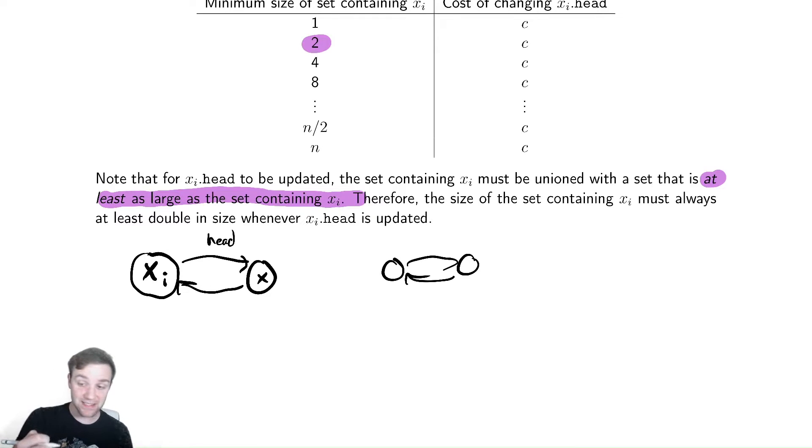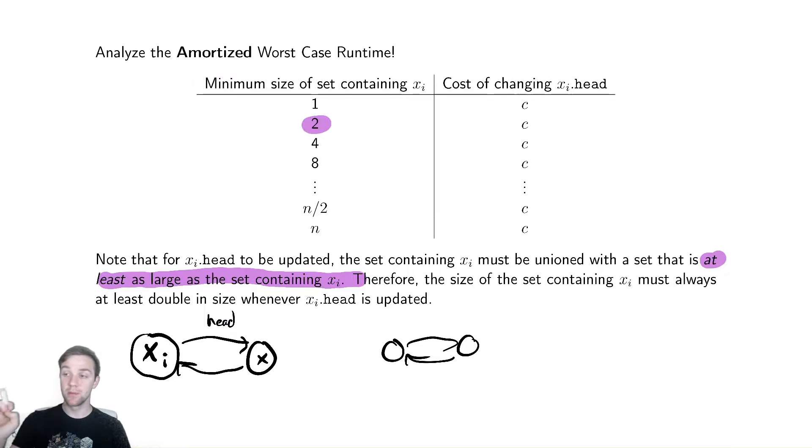Therefore, after I combine it with that set, it would have four. Then it would have to be combined with a set that is at least as large. When you combine that set of size four with another that's at least size four, you'll have at least eight elements, then at least 16, at least 32. Because of the cleverness of weighted union, where we were only updating xi.head if it was unioned with a set at least as large as the one containing it, that gives us nice benefits where the sets are always increasing by these powers of two.